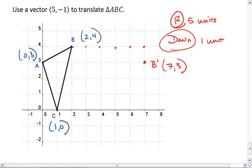I'll do the same thing with C - 1, 2, 3, 4, 5, and 1 down. C prime is at (6, -1).